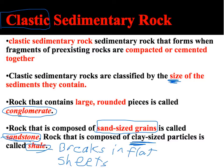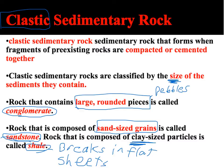So the three types: conglomerates have large pieces — you can see individual pebbles inside the rock. Sandstone contains sand-sized pieces. And shale breaks in flat sheets; you can't really even see the particles because they're a very fine size called clay-sized.